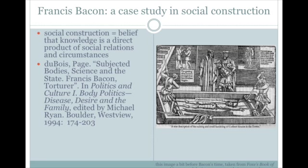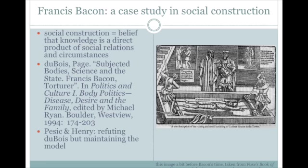Bacon, in protecting the state, had the role of extracting information out of his political enemies. And this involved a range of different forms of torture, including — what we see here — the rack, where people were stretched and stretched until they admitted their guilt to whatever crime they were being accused of. Dubois maintained that it was his role as Lord Chancellor that made him re-look at nature, that made him in effect a torturer of nature, developing a methodology that would allow him to subject nature to his reason. Without his role as torturer, he would have been unable to develop his ideas about the experimental method. Pessage and Henry in recent years have refuted Dubois, but still managed to maintain the older model of social construction. Henry, in particular, maintains that Bacon's ideas emerged out of his religious views, particularly his views about the role of the church in the state.